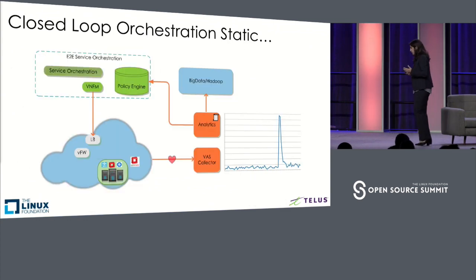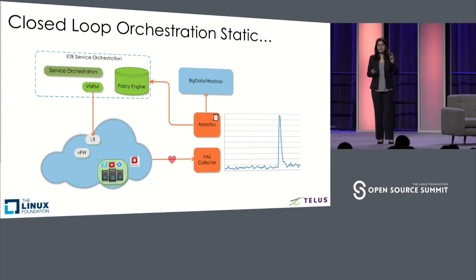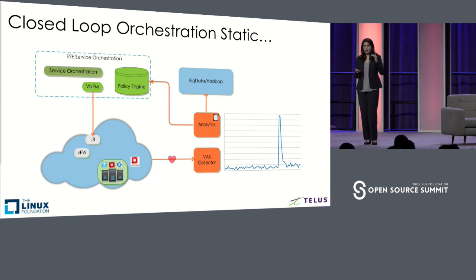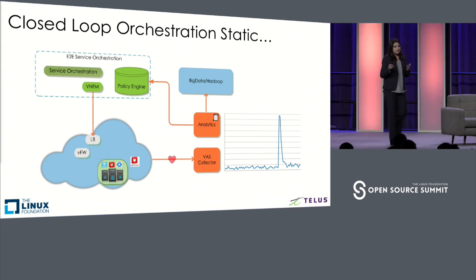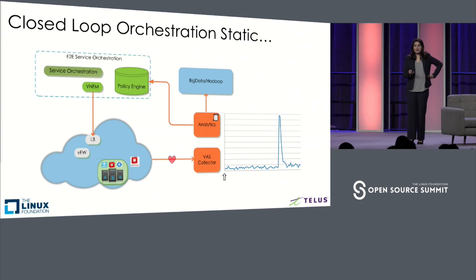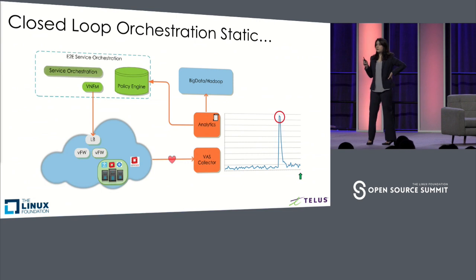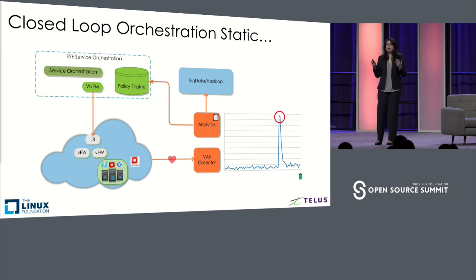Now I'll walk you through a simple example of a static closed loop — closed-loop orchestration 101. We have a situation where a virtual firewall is serving production traffic. We have associated a policy that says when it hits 80%, we need to perform a scale-out action. The policy has two constructs: a condition and an action. Currently we are looking at a static policy. The analytics run smoothly for the virtual firewall, gradually there is a production hit, we reach the 80% mark, and the static policy executes a scale-out operation — we are back to a healthy, happy state. This is called a reactive response, where a static policy has received a trigger and executed a scale-out operation in an almost reactive manner.